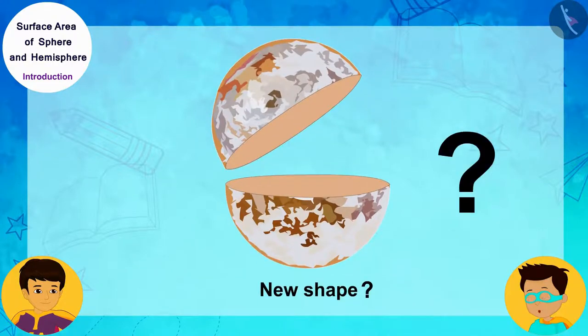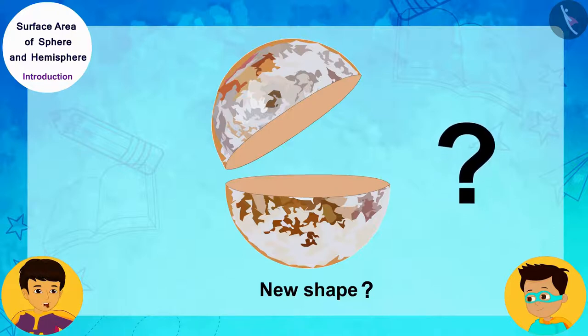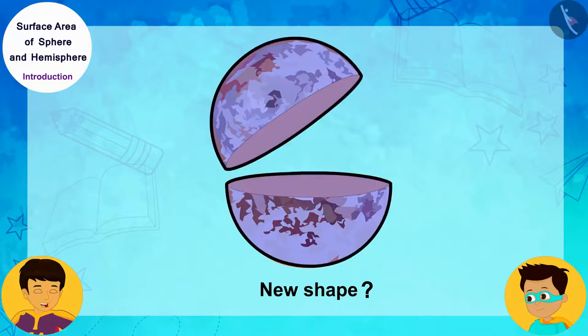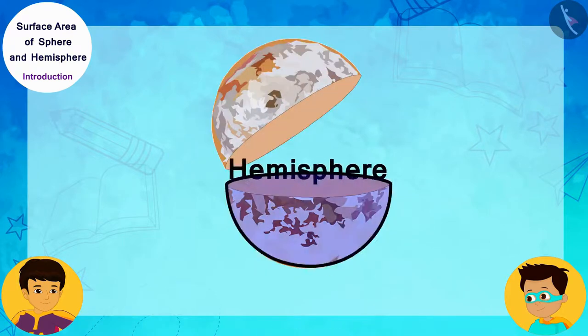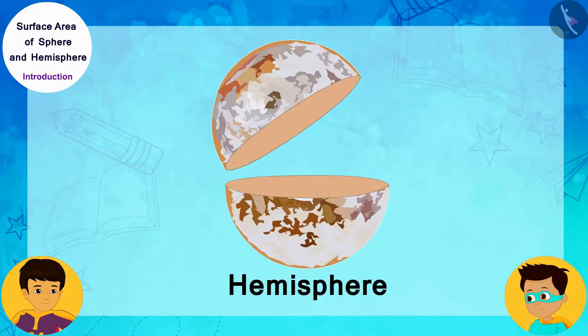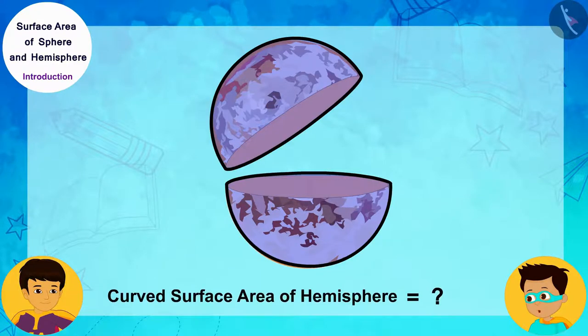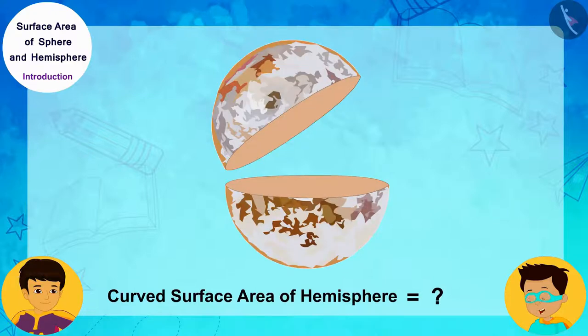Thomas, if we take any solid sphere and cut it into two parts by passing a plane through its center, then it will be divided into two equal parts. And each half of this is called a hemisphere. Now, what will be the formula for the surface area of this hemisphere? I will tell you.